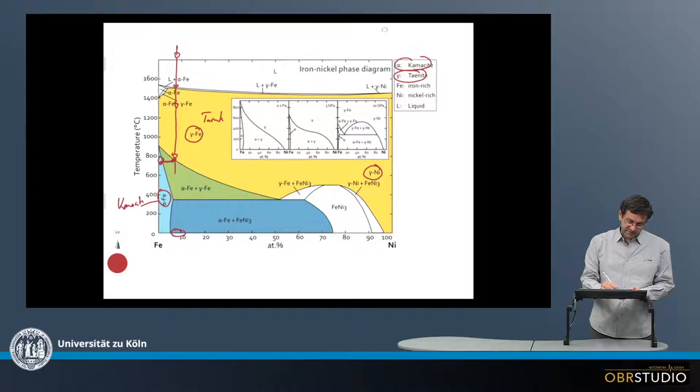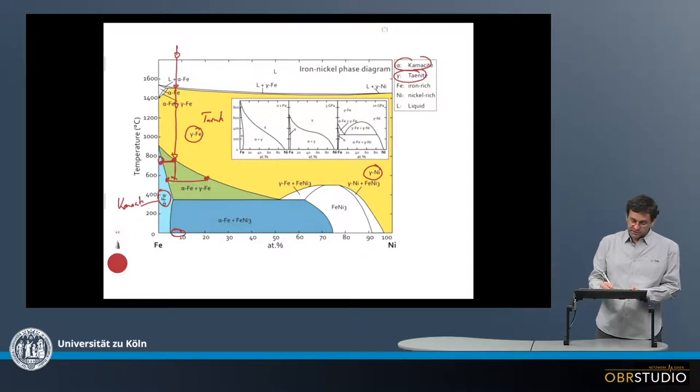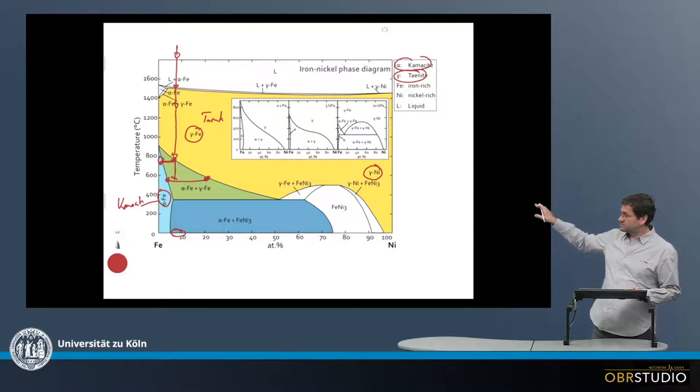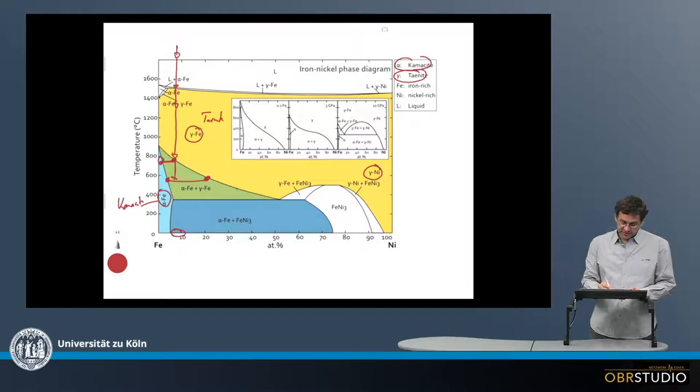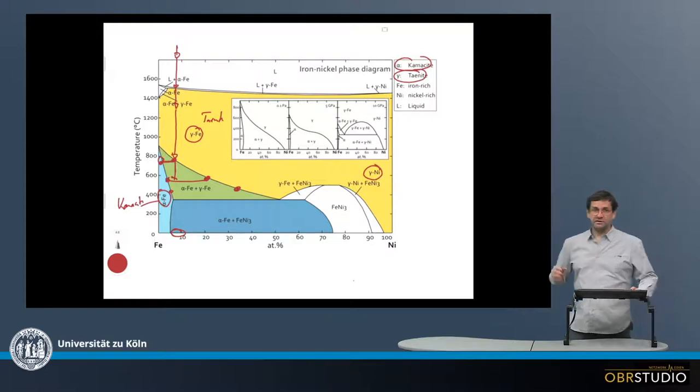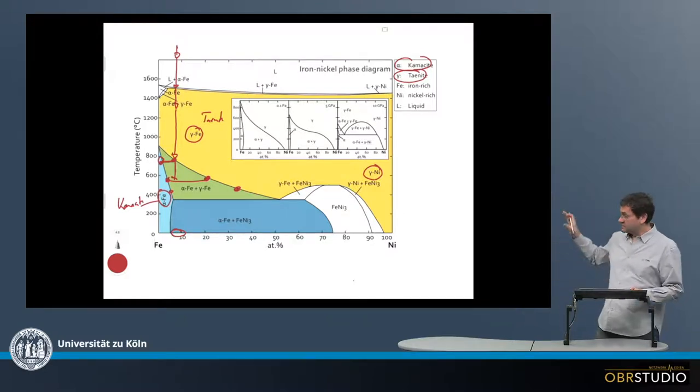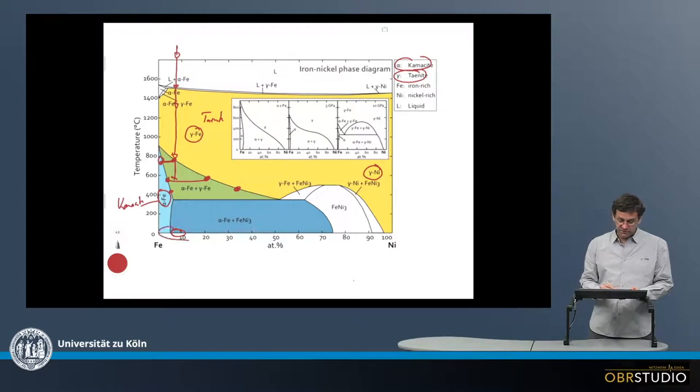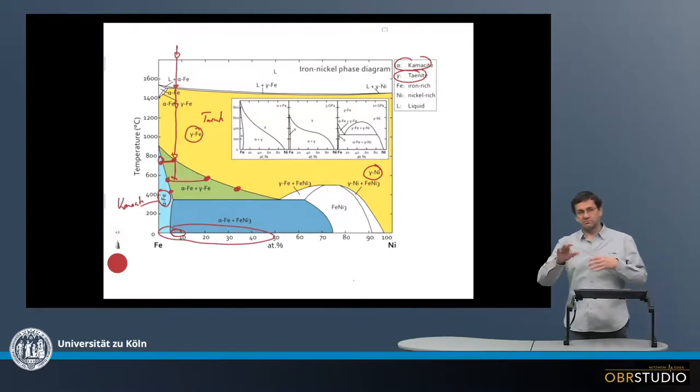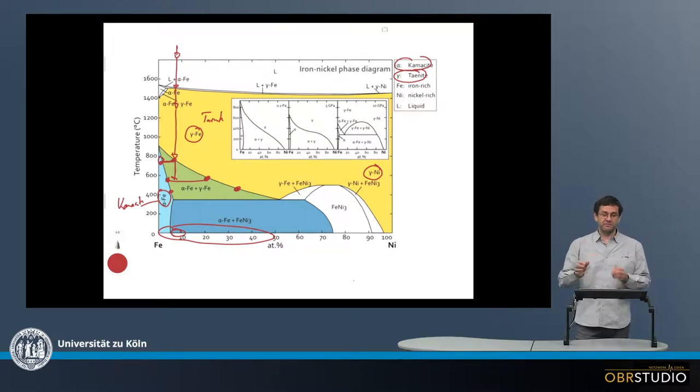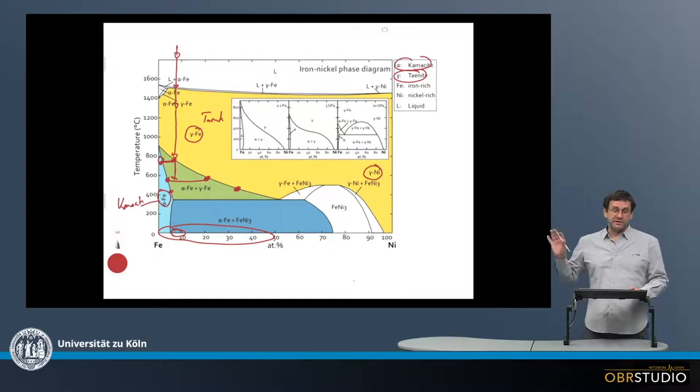With decreasing temperature, the kamacite will become increasingly more nickel-rich. This is the kamacite and the taenite at approximately 600 degrees. This will continue, and at some point maybe even something like 35 to 40 percent nickel might be reached in the kamacite. This is why in this phase diagram the entire range between maybe 5 and 50 atomic percent, which translates more or less also into weight percent because they have similar masses, is the interesting range.